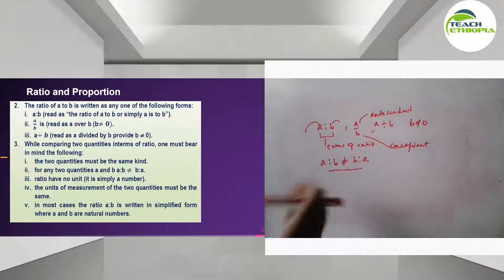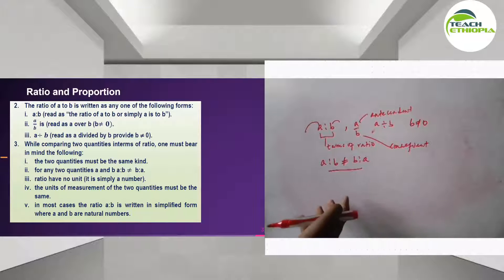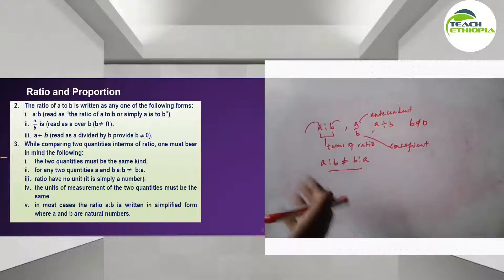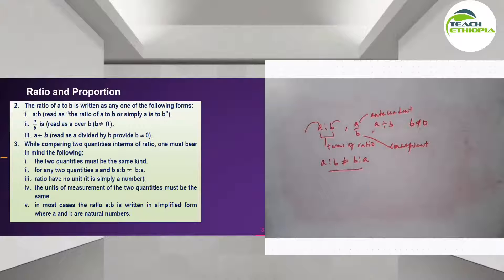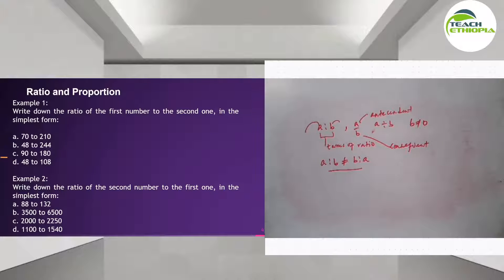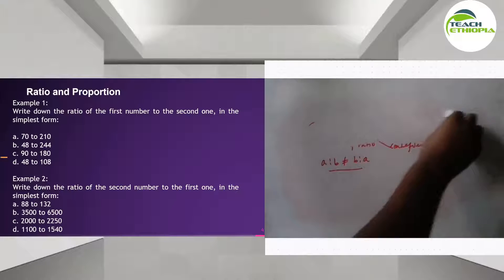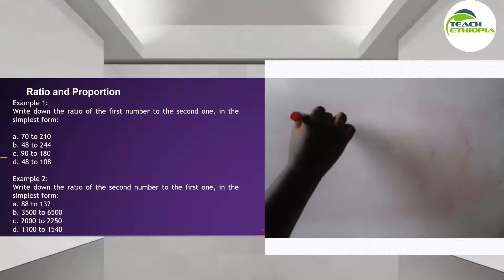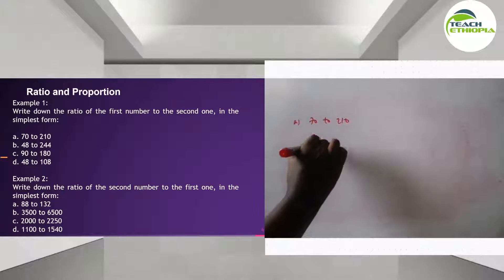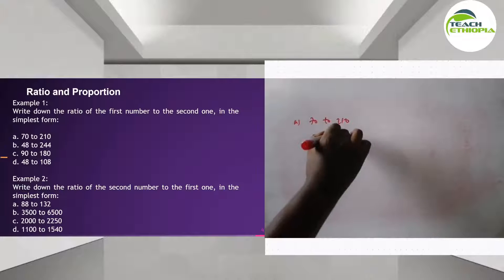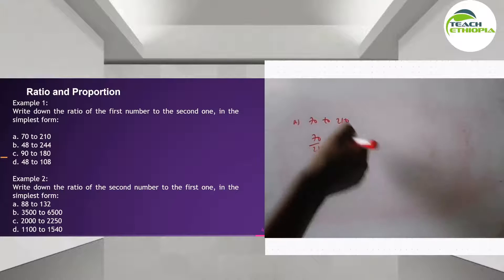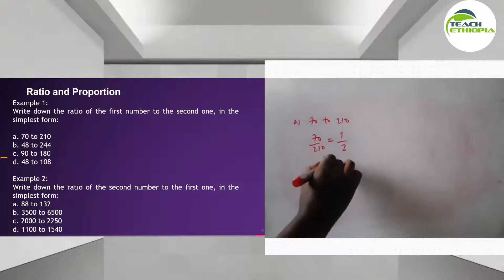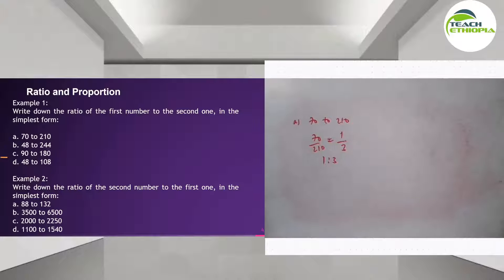Ratios must be expressed in simplified form, where a and b are natural numbers. For example, write down the ratio of the first number to the second: if a is 70 to 210, dividing both by 70 gives 1 over 3. So the simplified form is 1 ratio 3.